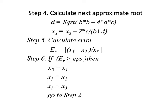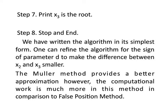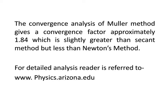If the allowed error is greater than the relative error, we print the value x3, which is the approximate root. In this algorithm, we have presented the simplest form. You can also include the sign of factor d = √(b² − 4ac) to make the denominator larger, so that the difference between x2 and x3 is smaller. The Muller method is a better approximation for the function, but the computational work is much more than the secant or false position method. Its convergence factor is approximately 1.84, slightly greater than the secant method but less than Newton's method. For more details, the viewer is referred to the website physics.arizona.edu.